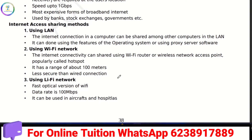Internet access sharing methods include LAN, where LAN is used for local connectivity. Using the features of the operating system, you can also share access. Wi-Fi network and hotspot are also used to share internet access. Wi-Fi is classified into different categories.